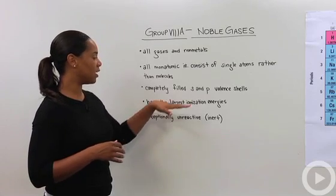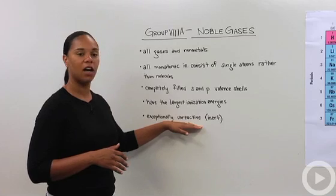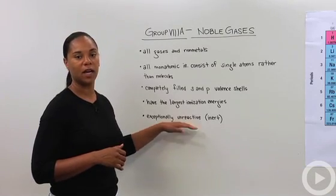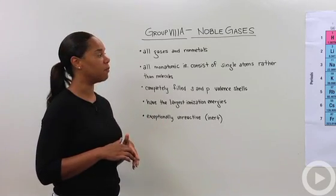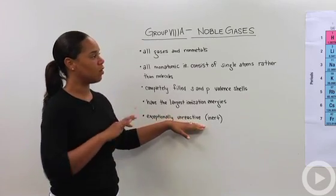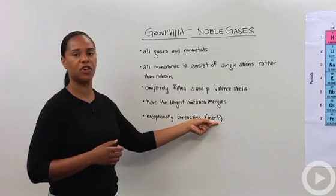So as a result of that, just to put it on a little bit thicker, these guys are exceptionally unreactive. So unlike the group 1A elements like sodium and potassium that are super reactive and have really low ionization energies, want to lose electrons, these guys, the noble gases, are the opposite.